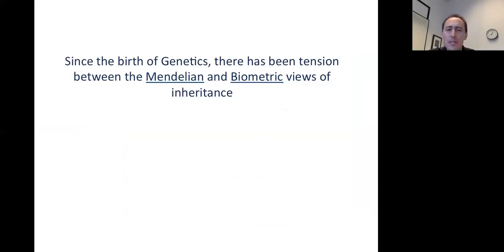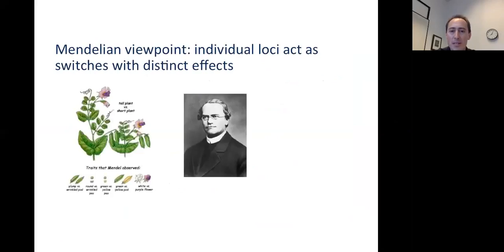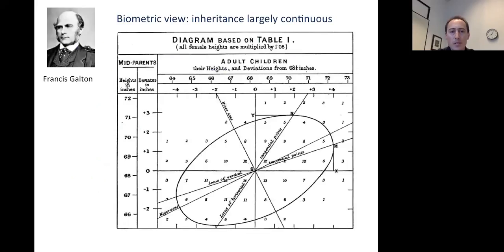Since the beginning of genetics in the late 19th century, there's been tension between two different kinds of views of inheritance, which we can think of as the Mendelian and biometric views. With Mendel's work in the 1800s, there was the discovery that you can have individual loci that act effectively as switches with very discrete effects. But at the same time, there was beginning to be work on studying the inheritance of continuous traits.